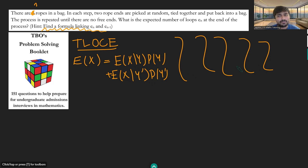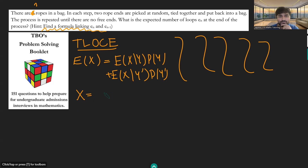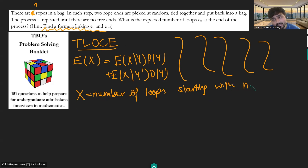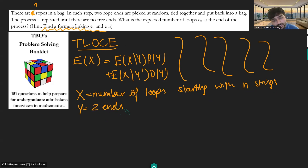How do we use this to work out the expected number of loops? We start by picking one end, then pick another. We let X equal the number of loops starting with n strands of spaghetti, and Y equals the event that the two ends we pick are from the same strand. Now we just plug everything into this formula.